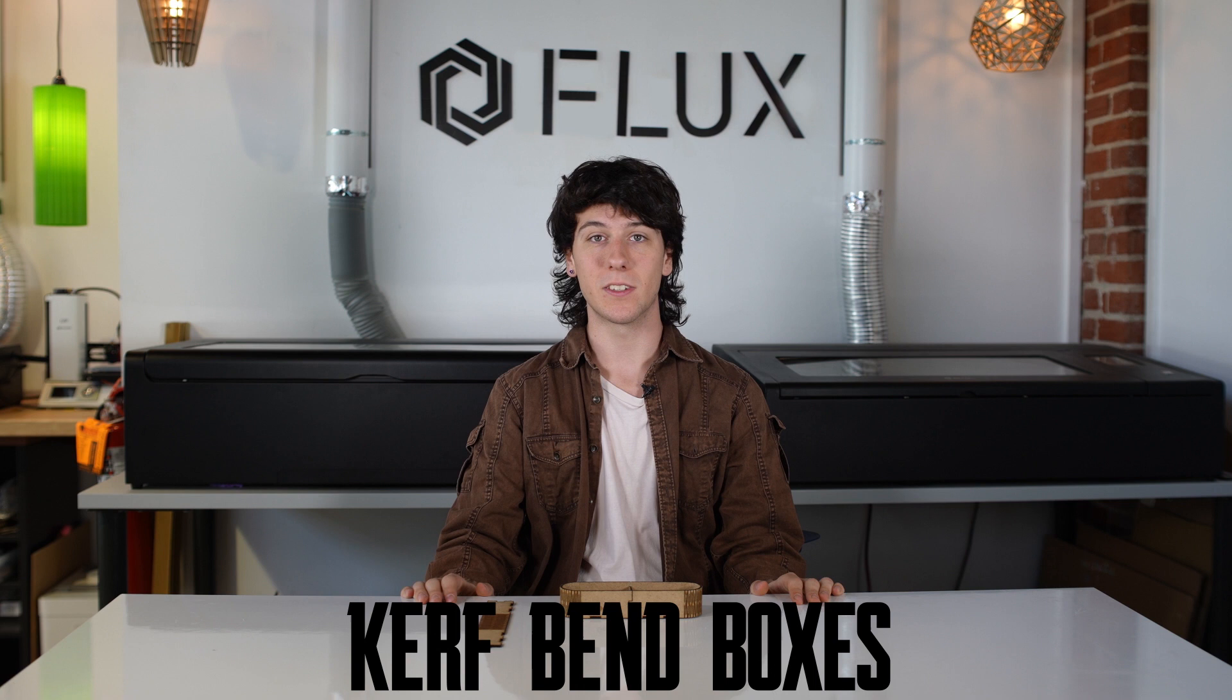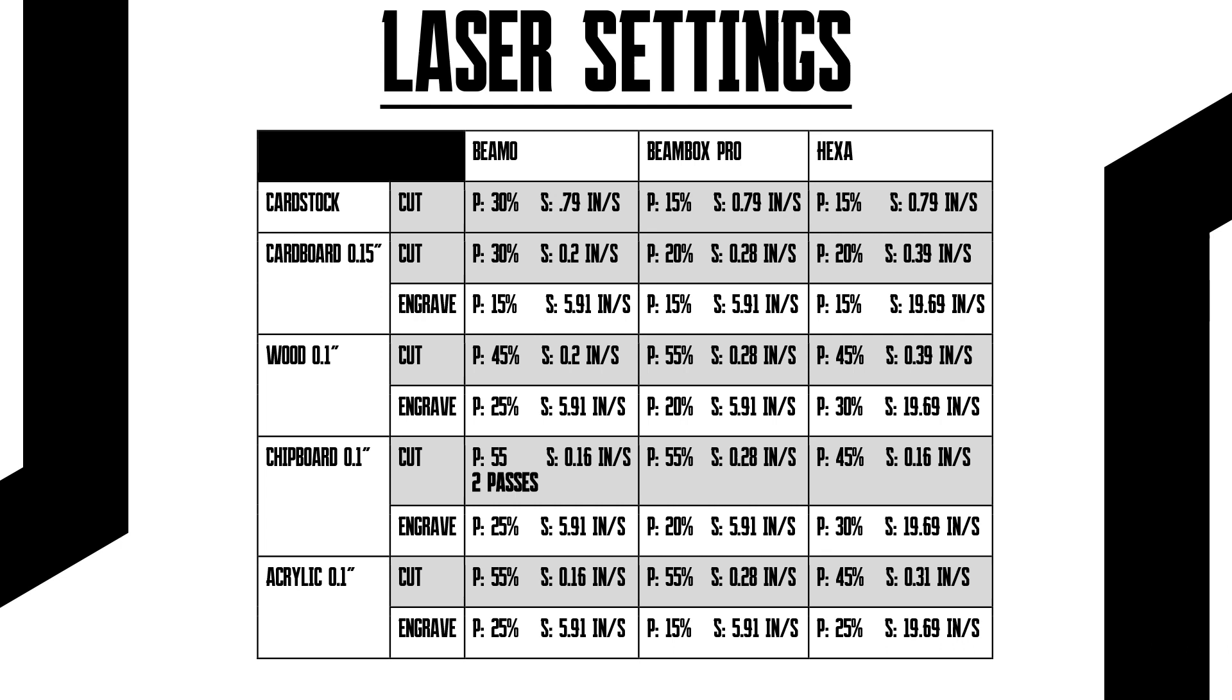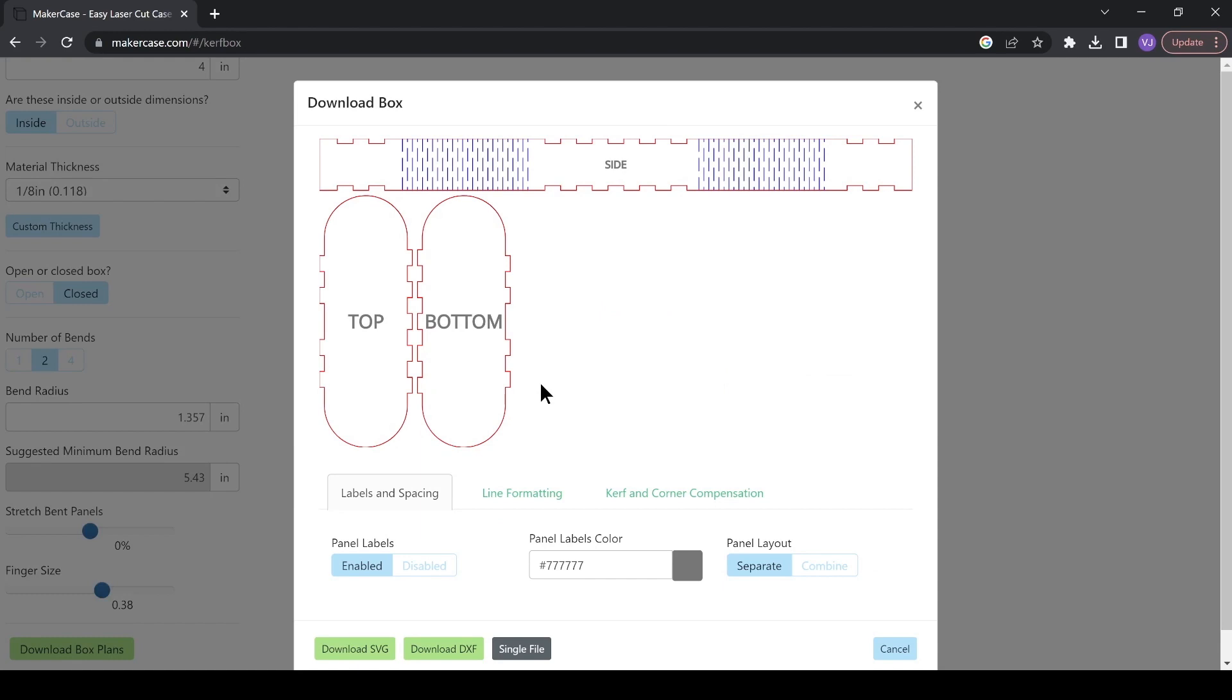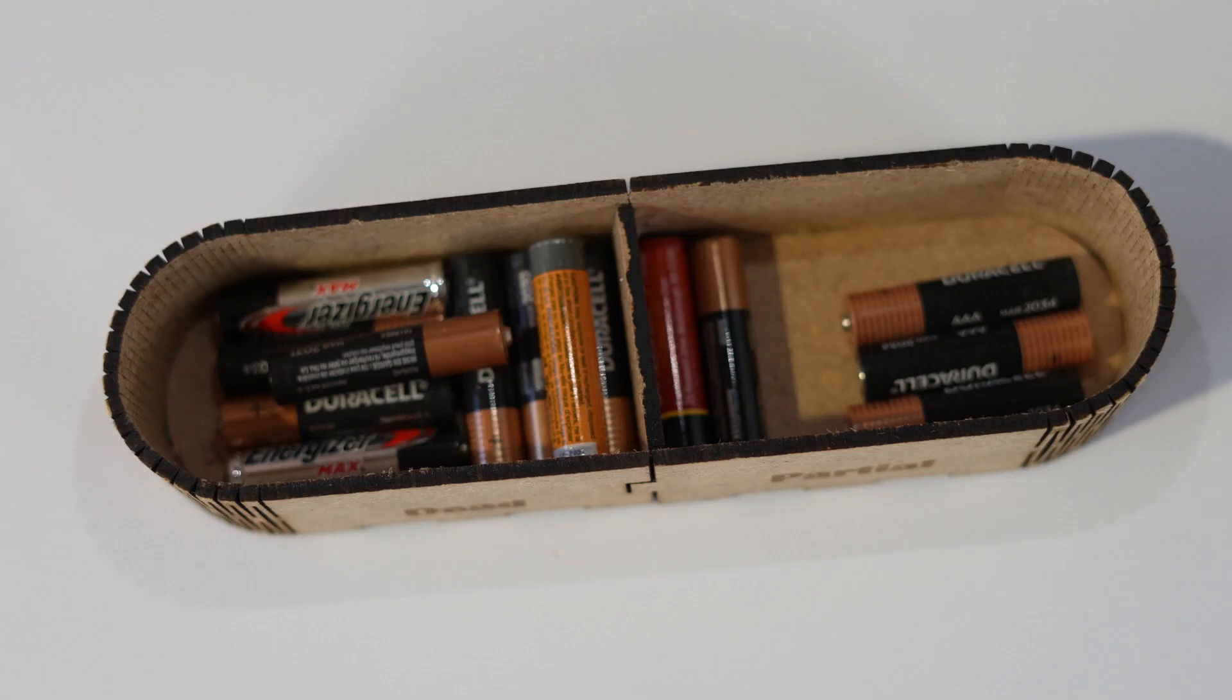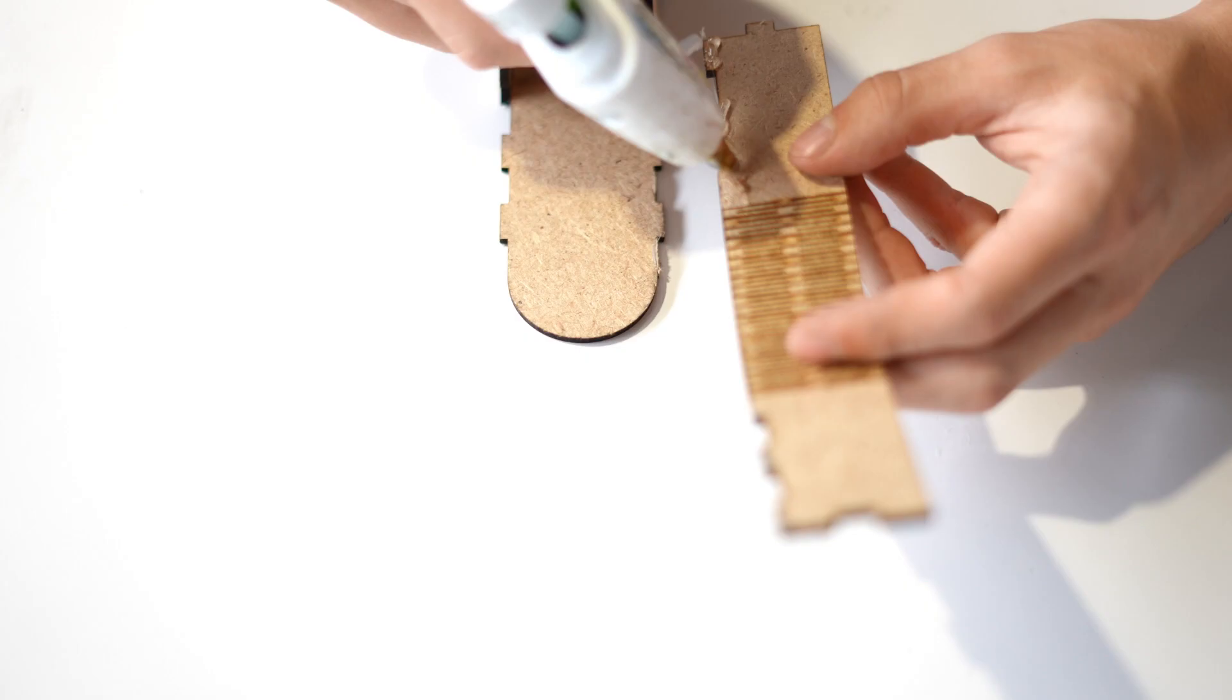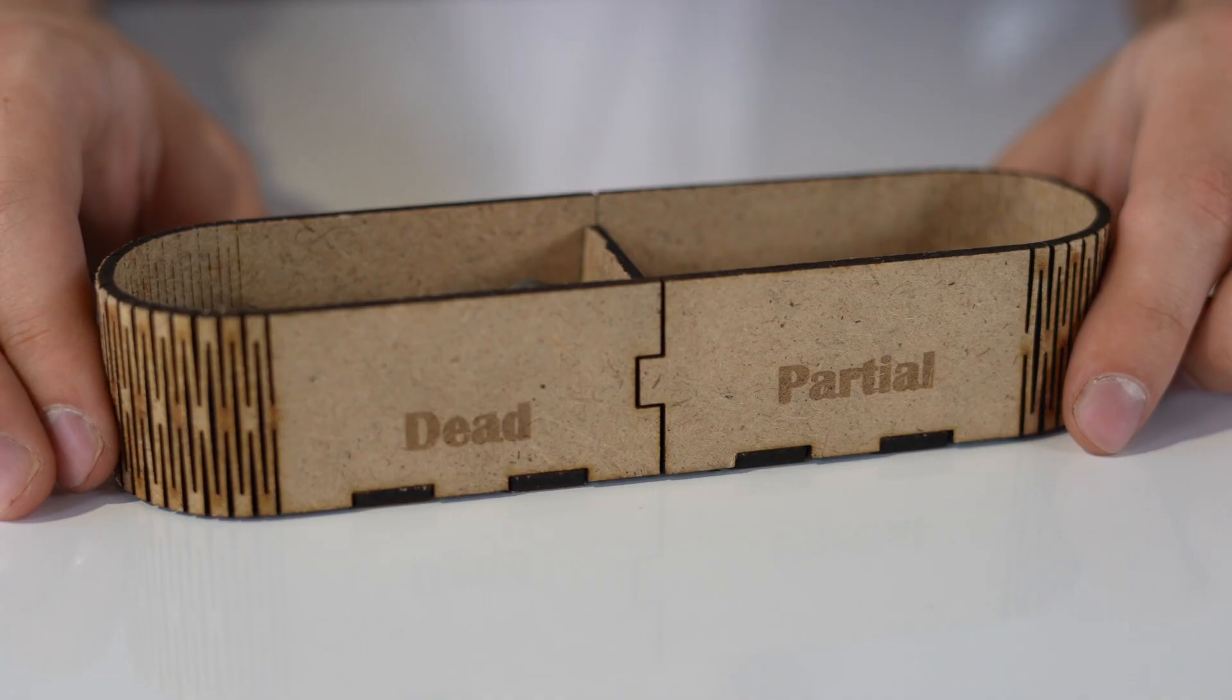Hey folks, today we're talking about kerf bend boxes. A kerf bend is a special pattern put into rigid material to make it flexible and 3D. In my case, I made a battery box with two sections for dead and partial batteries, divided by a little piece in the middle. There's no lid on this box because I wanted easy access when it's on the shelf.